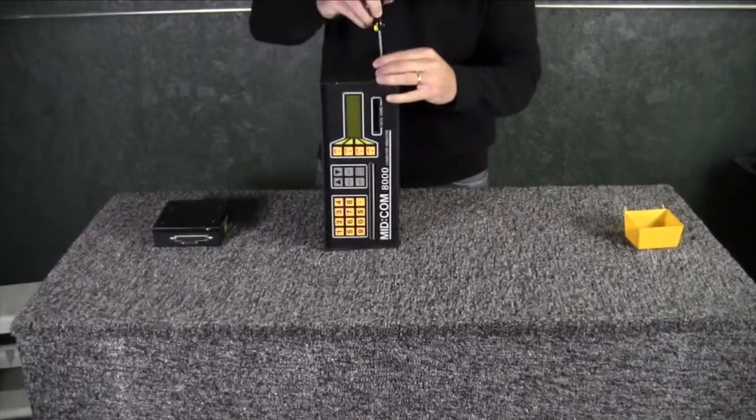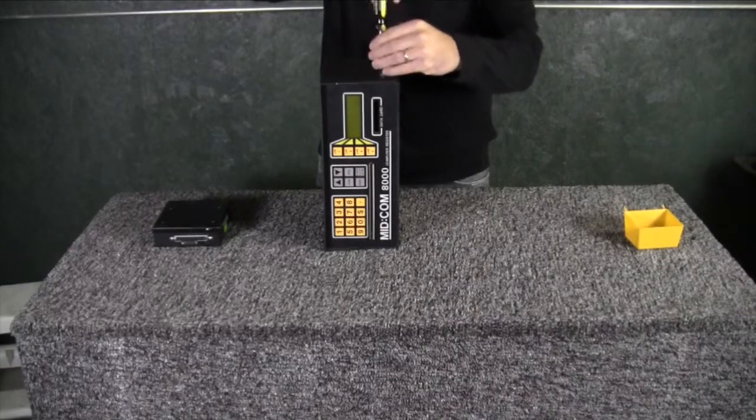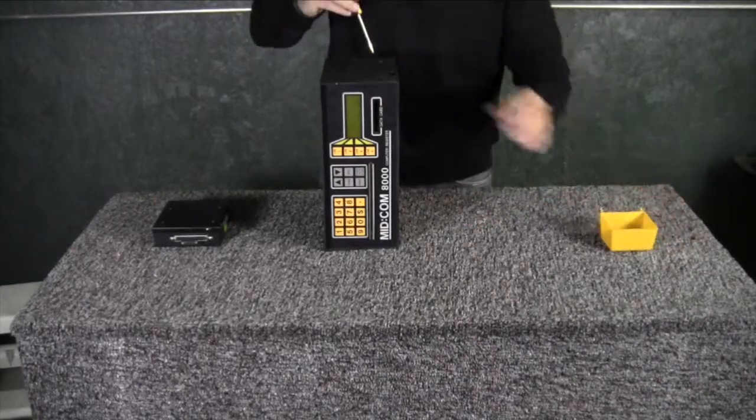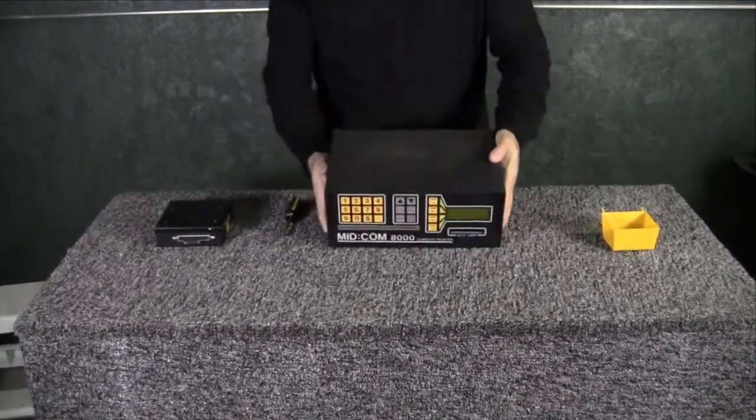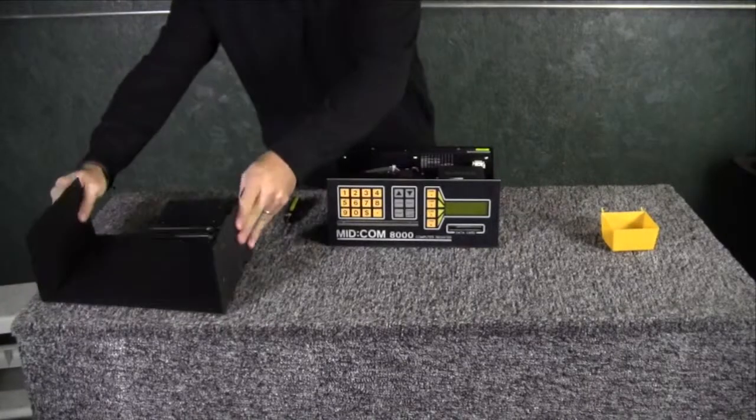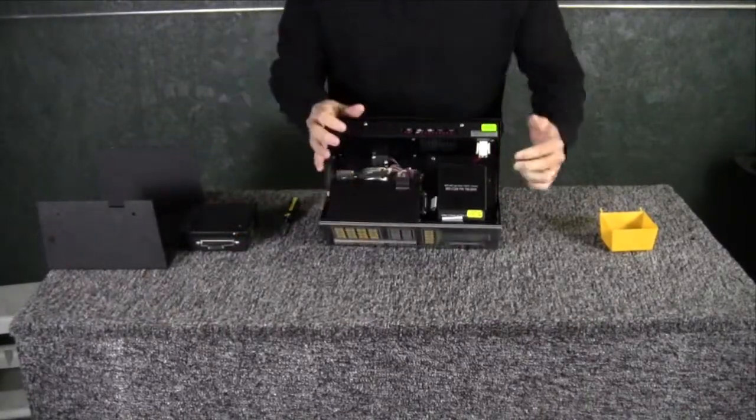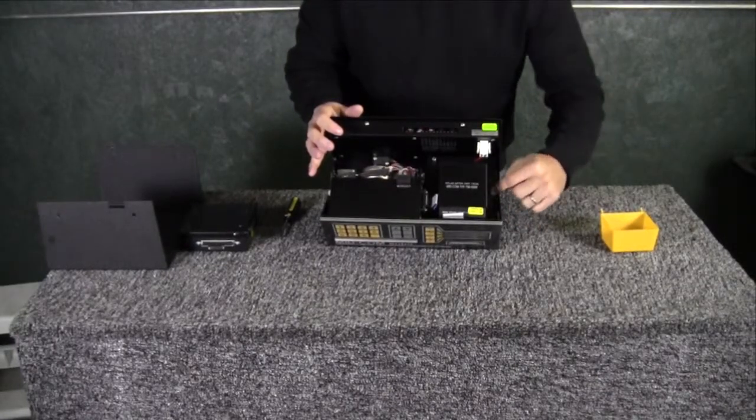Anyway, so just first off, there's four screws. Take off the cover and you can see in there. Here's our printer battery and the CPU is underneath the battery, so we're gonna have to get to that.